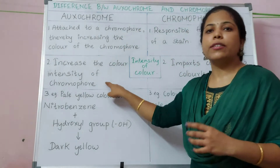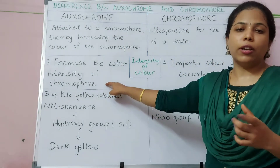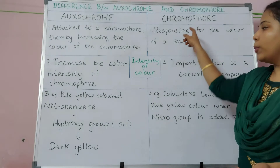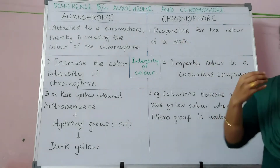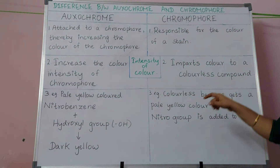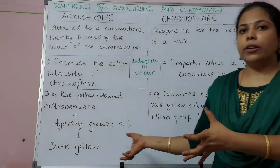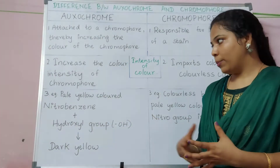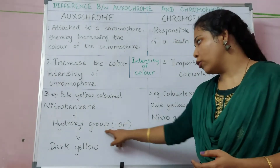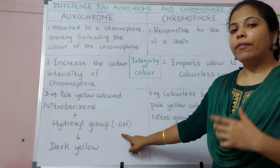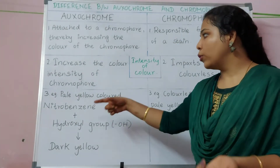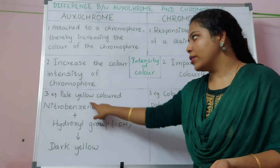Auxochrome increases the intensity of the color of a chromophore, but chromophore gives color to a colorless compound. The third point is about examples. An example for auxochrome is the hydroxyl group — when this hydroxyl group is added to a nitrobenzene, which is pale yellow in color,